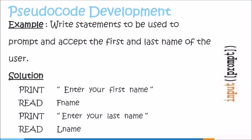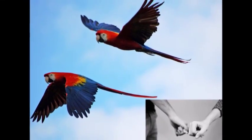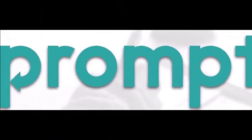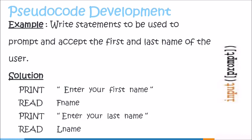Here we have an example which looks at the use of prompt and input statements. Both the prompt and input statements are generally used as a pair, in that there is normally an input statement after each prompt statement. In our example, we have two pairs of prompt and input statements. In our first pair, the user is being requested to enter their first name. In the second pair, the user is being requested to enter their last name. In both pairs, we can see that after each prompt statement, we have the input statement to accept whatever entry is being entered via the keyboard.